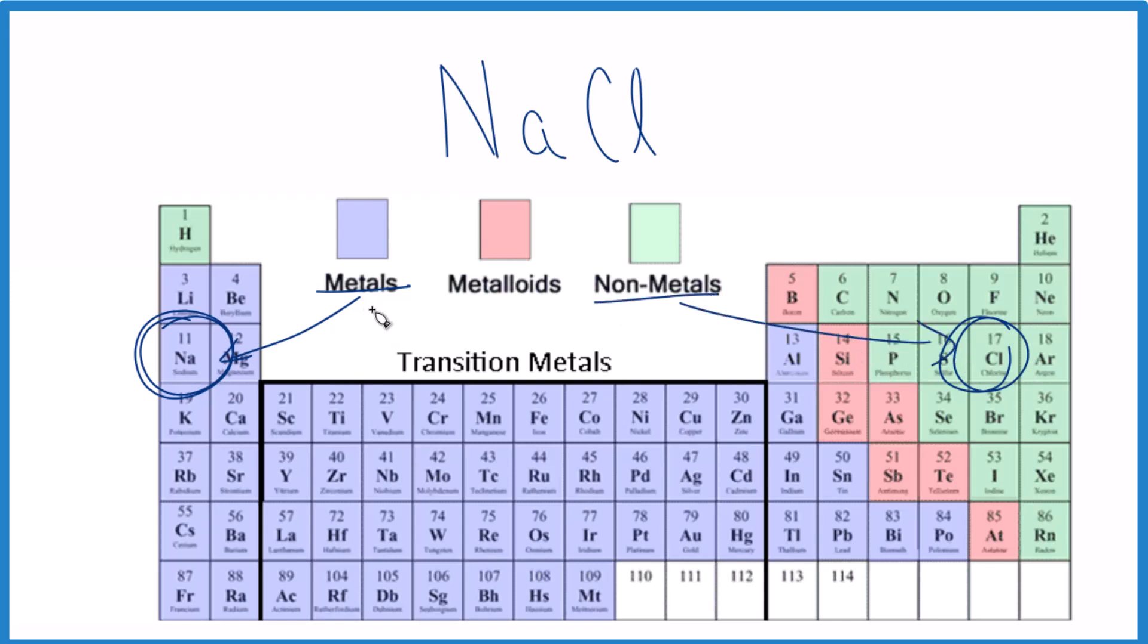When we have a metal plus a non-metal, that's going to be ionic. So we'll have an ionic compound. So already we know we have an ionic compound. There's an ionic bond between the Na and the Cl. So type of compound or type of bond for NaCl, that's ionic. Let's take a look at how that happens, though.